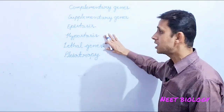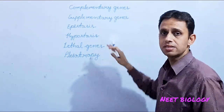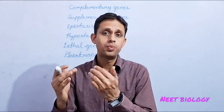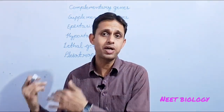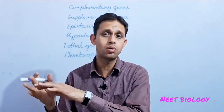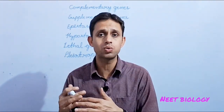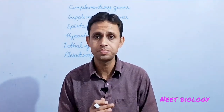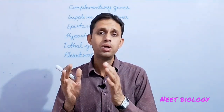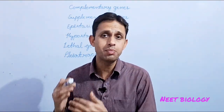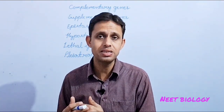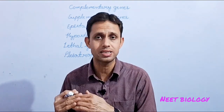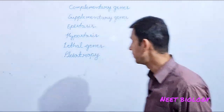Next is hypostasis. Those genes which are suppressed — जो genes किसी chromosome पर suppressed हुए अन्य gene के pair से — तो उन्हें कहते हैं hypostatic genes, and this condition is known as hypostasis.